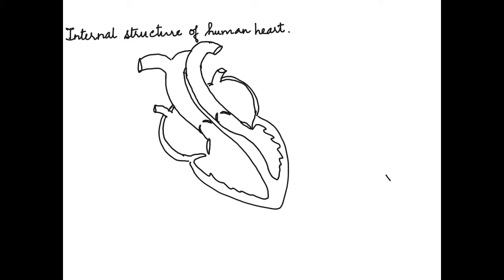Internally, the heart also shows thread-like structures which extend from the tip of the cusp of the valve to the ventricular walls. These are shown in the form of dotted lines, drawn on both sides, and they are attached to special muscles. Next, we draw the inferior vena cava on the lower side, which completes the structure of the heart.